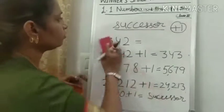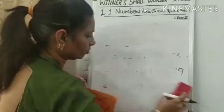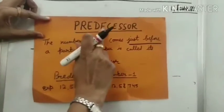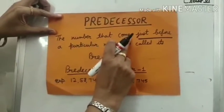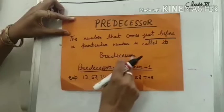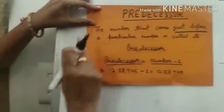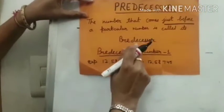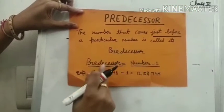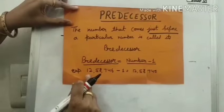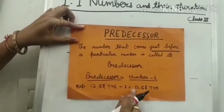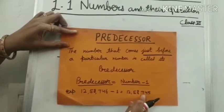Next is predecessor. The number that comes just before a particular number is called its predecessor. Just before a number means minus 1, so predecessor is equal to the given number minus 1. For example, 12,58,746 minus 1. The answer is 12,58,745.